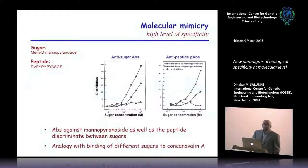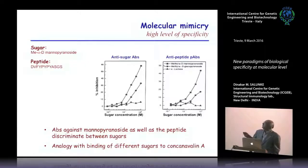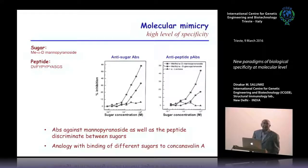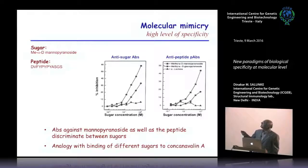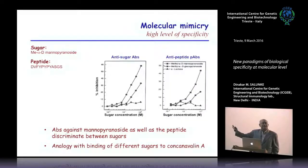While these antibodies cross-reacted between sugar and peptide, it was also very clear that they discriminated very nicely between different sugars — mannose, glucose, and lactose — almost the way lectins discriminate between different sugars. There is only a very small difference between glucose and mannose, and you could see that discrimination, which is consistent with Landsteiner's experiment.